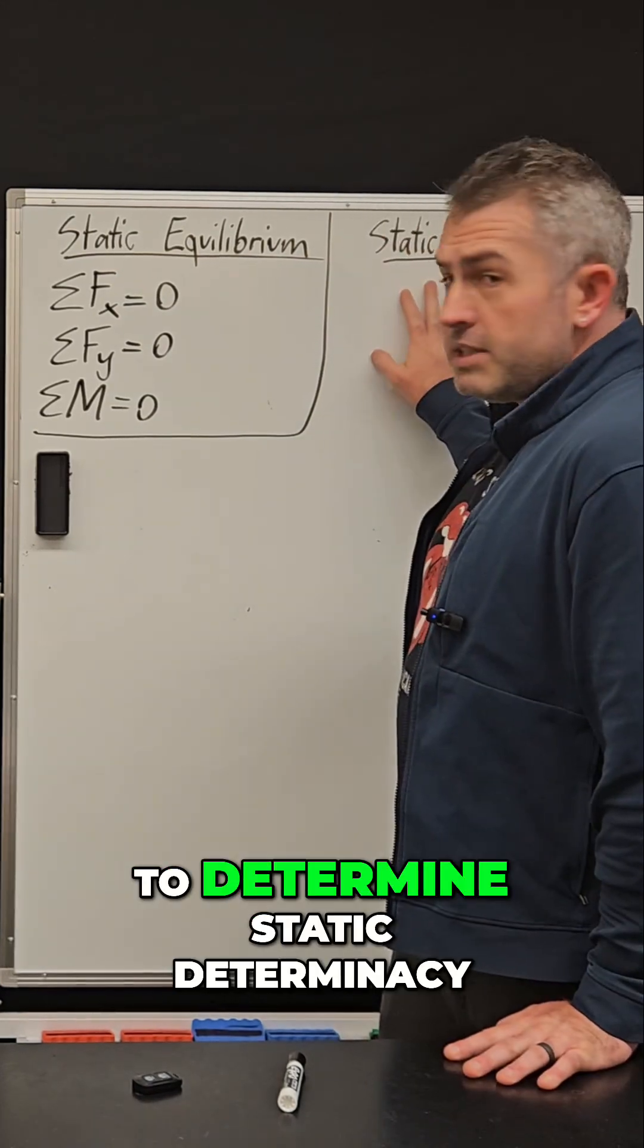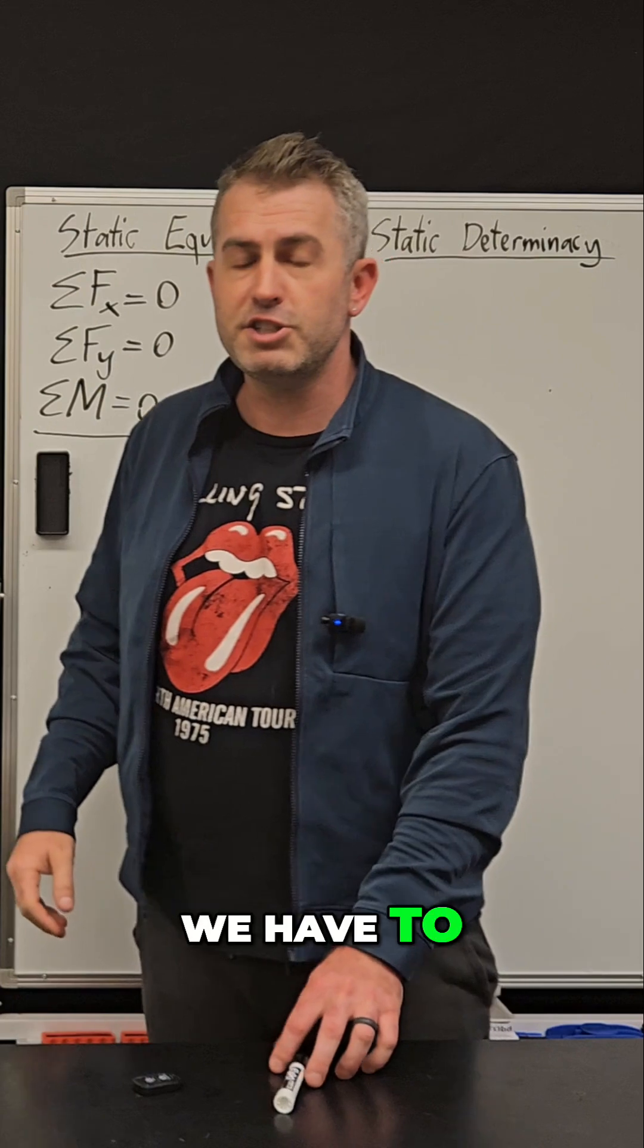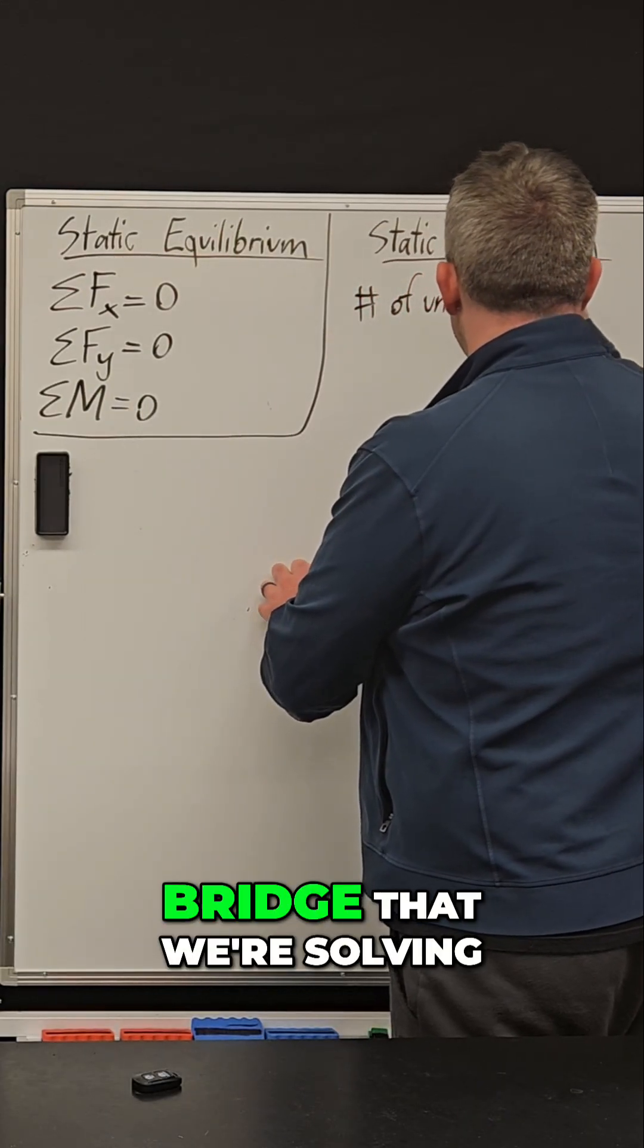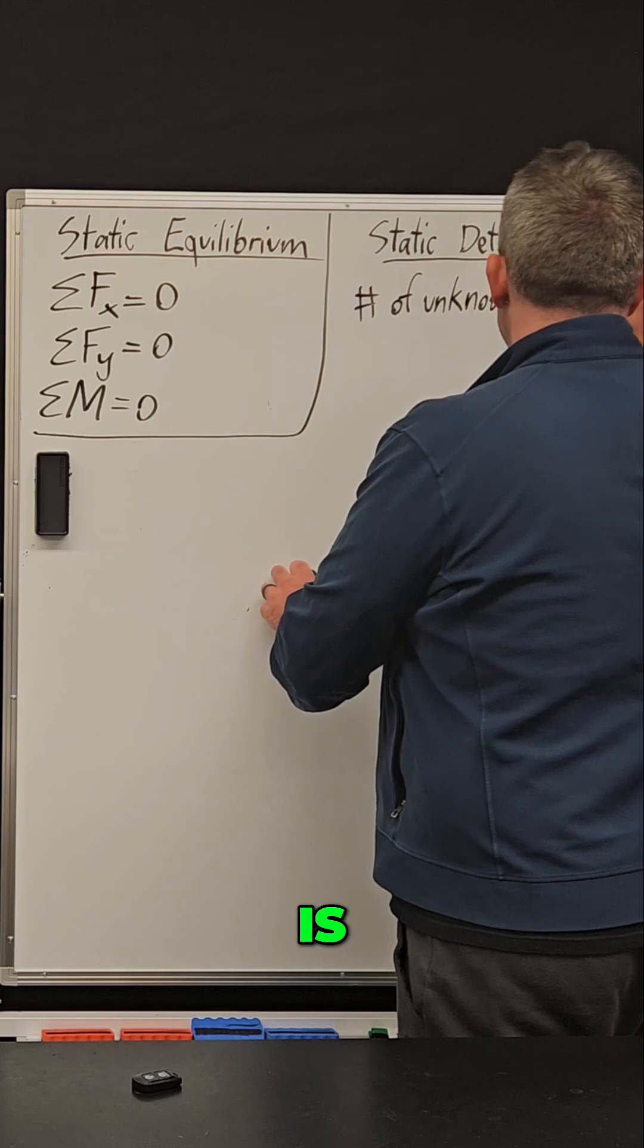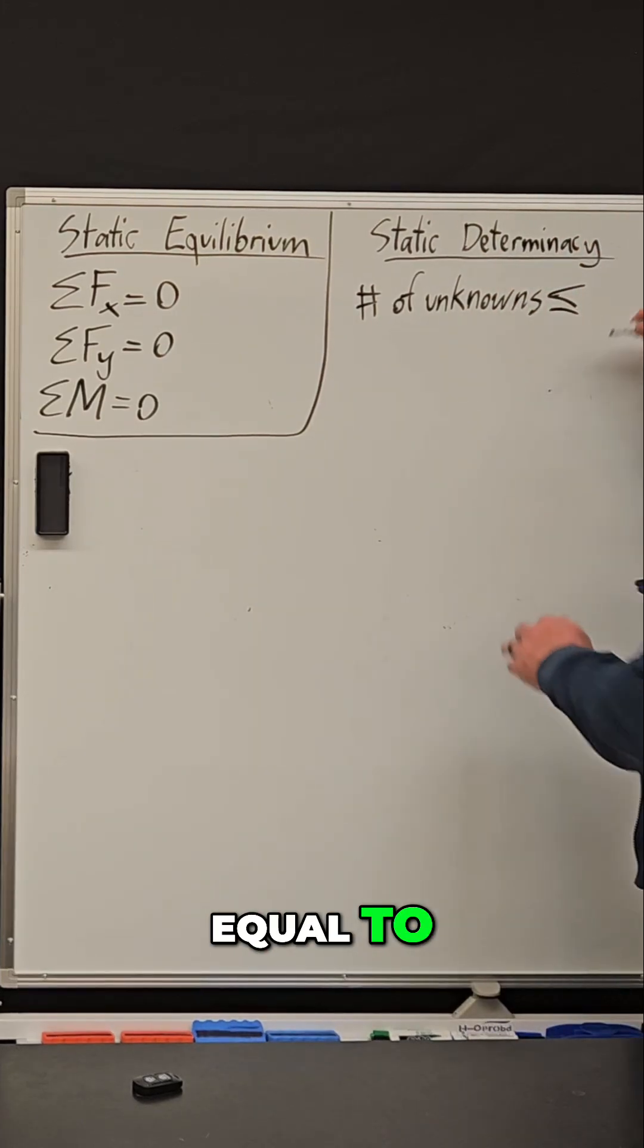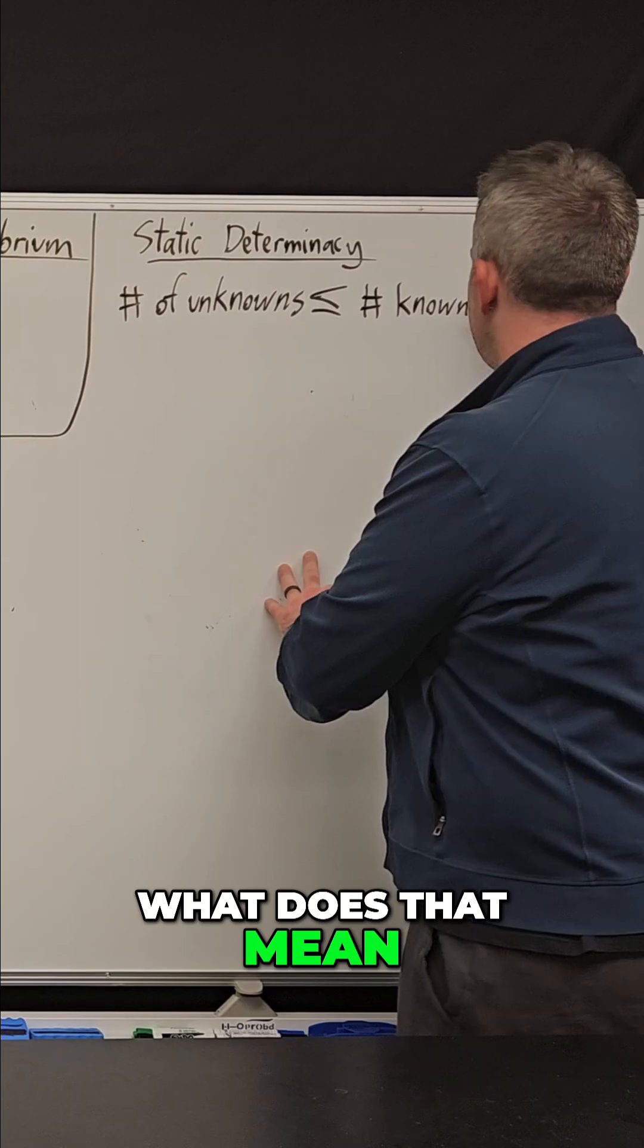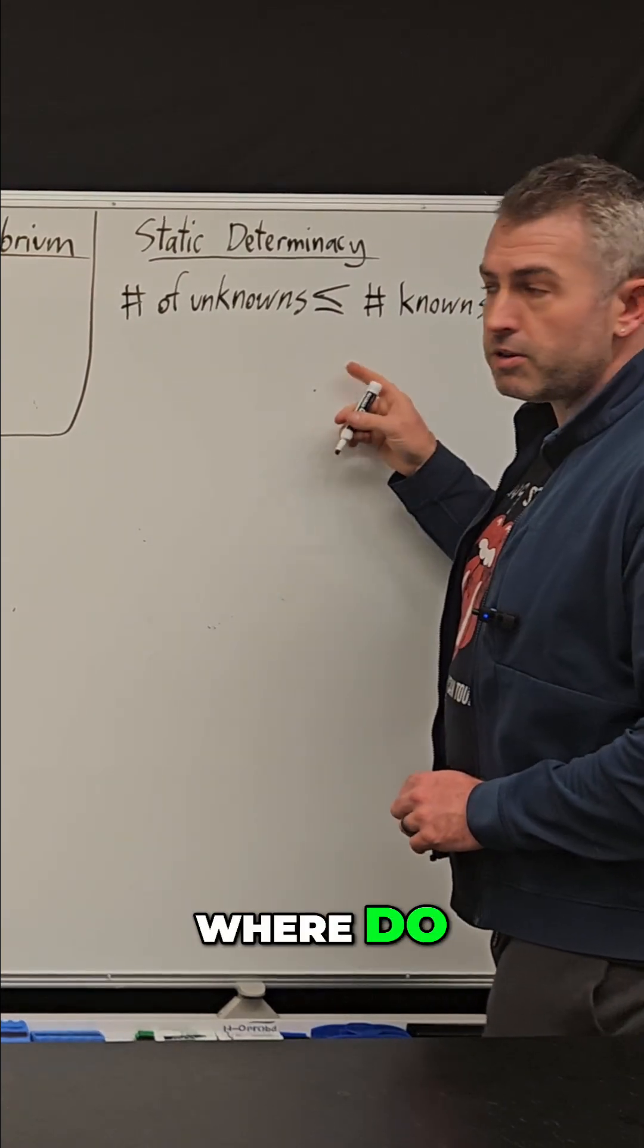So to determine static determinacy, we have to check that the number of unknowns in this bridge that we're solving for is less than or equal to the number of knowns. So what does that mean? Where are our unknowns? Where do those come from?